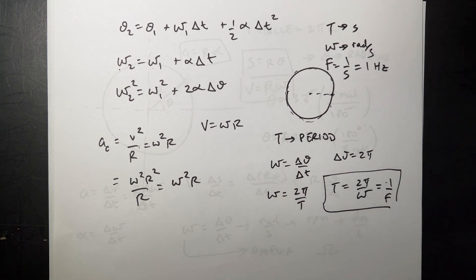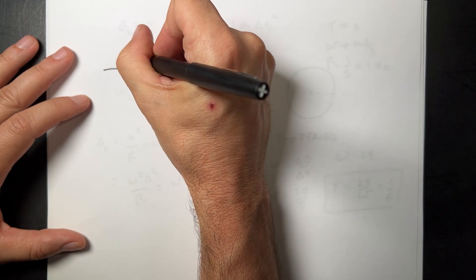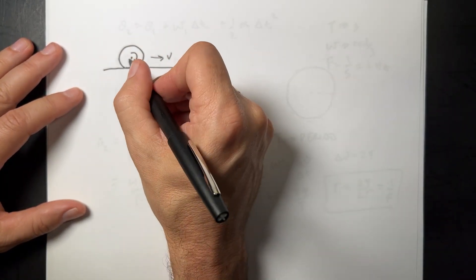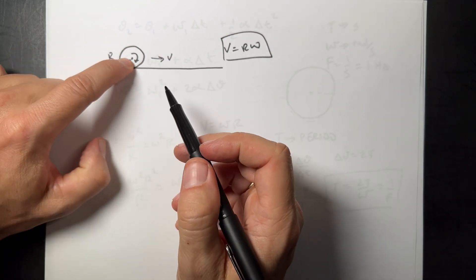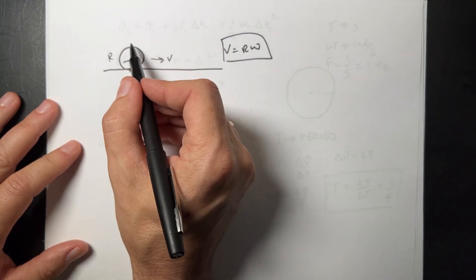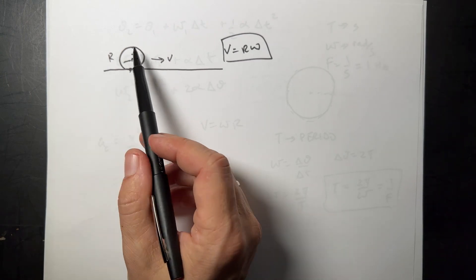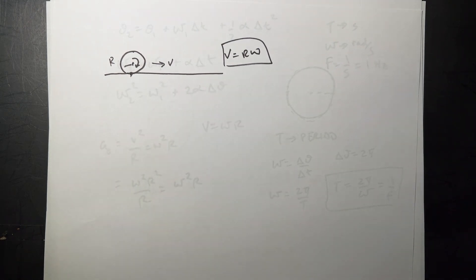One practical application: a rolling wheel of radius r has velocity v = r·ω at the axle (the center). The point of contact is at rest if rolling without slipping, and the top moves faster. This is basically how your speedometer works — it measures the angular velocity of your axle and, assuming correct tire size, calculates your velocity.